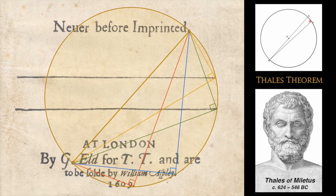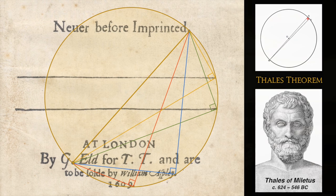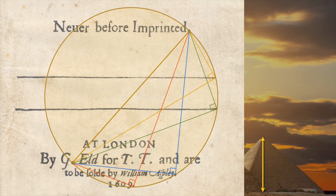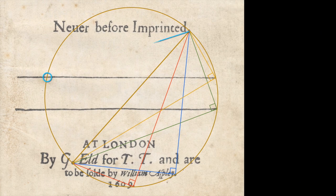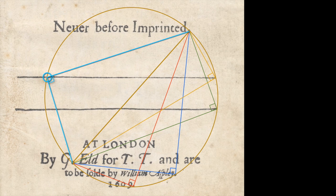But Thales is best known as the first person to measure the height of the Great Pyramid of Giza, and he did it using the geometry of right-angled triangles. Now, let's complete the image by connecting the two remaining intersections between the circle and the horizontal lines here and here.